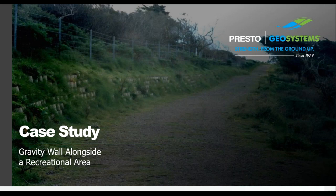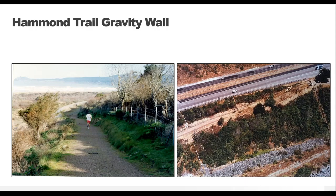The first case study is about the Hammond Coastal Trail in California. The slope between the roadway and the trail was badly eroded and needed to be shored up to allow for safe use of the trail. Slope erosion, especially below roads or areas with live loads, is very common, and building a retaining wall was a great way to mitigate the problem long-term rather than doing many fixes year after year.